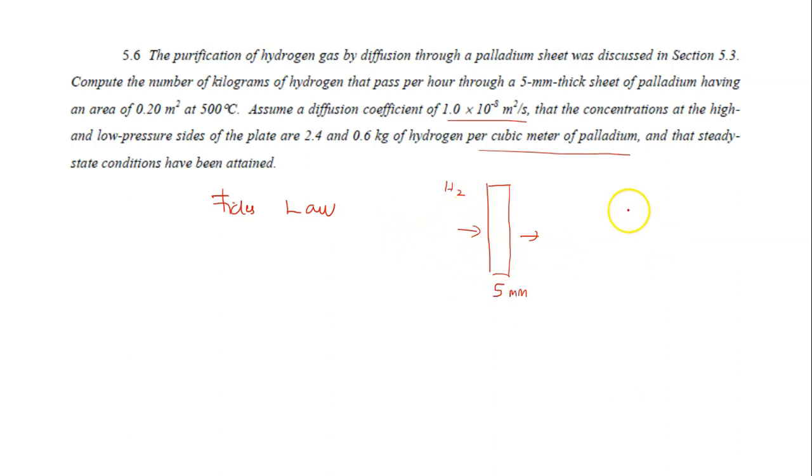The thickness of the plate is 5 mm with an area of 0.2 m² at 500°C. The diffusion coefficient is given as 1 × 10⁻⁸ and the concentrations at the high pressure side is 2.4 kg per m³ and this is 0.6 kg per m³. So it asks you to compute the number of kilograms of hydrogen that pass per hour.